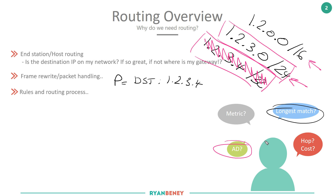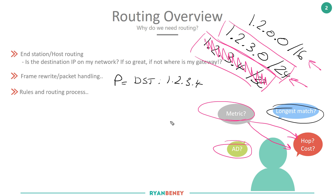The administrative distance — and if the administrative distance is the same, do I understand metric, and that the metric differs on different IGPs: RIP versus OSPF?